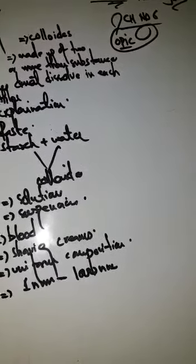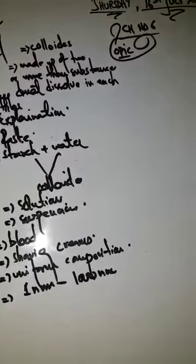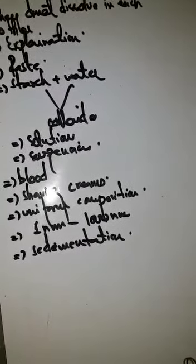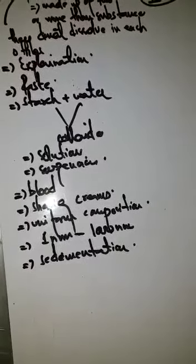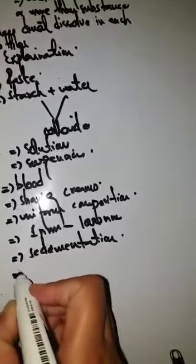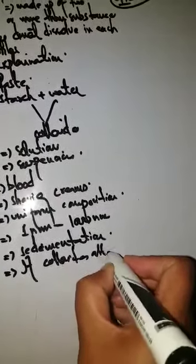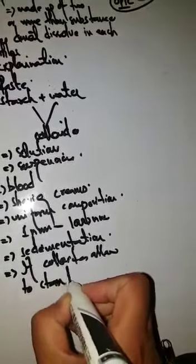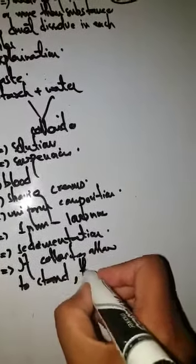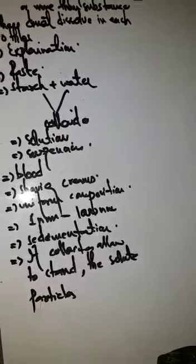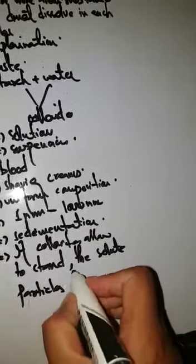The solute particles are larger molecules. If you allow a colloidal solution to stand for a while, the solute particles do not settle down at the bottom of the container — that is, there is no sedimentation in colloids. Unlike a suspension, where if you shake it and leave it for some time the particles will settle at the bottom, in a colloidal solution there is no sedimentation.